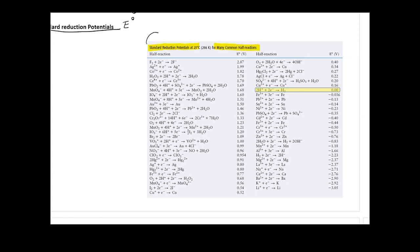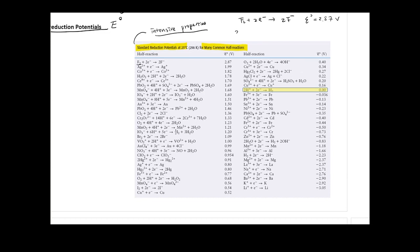The standard reduction potential is an intensive property. What that means is it's not going to be affected even if you multiply a coefficient in front of the species. For example, F2 plus two electrons gives you 2F minus, and the E0 is 2.87 volts. If you multiply 2 in front of this, the E0 will still be the same. This is something many students get confused about — the standard reduction potential is an intensive property, so even changing the coefficient does not change it.